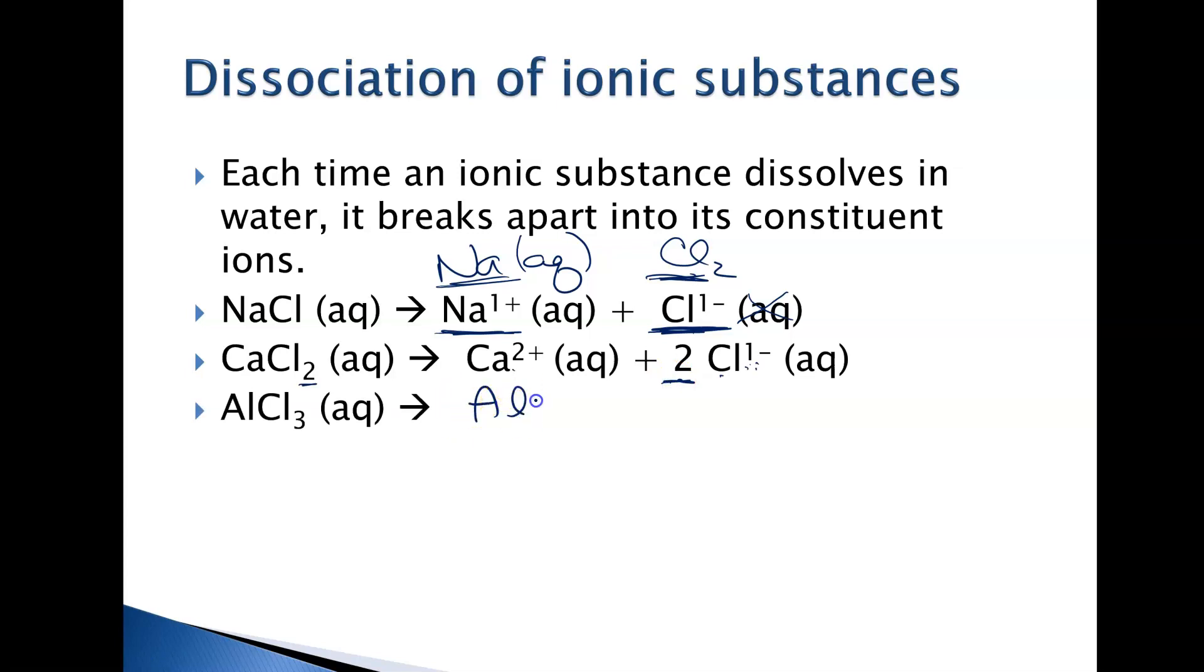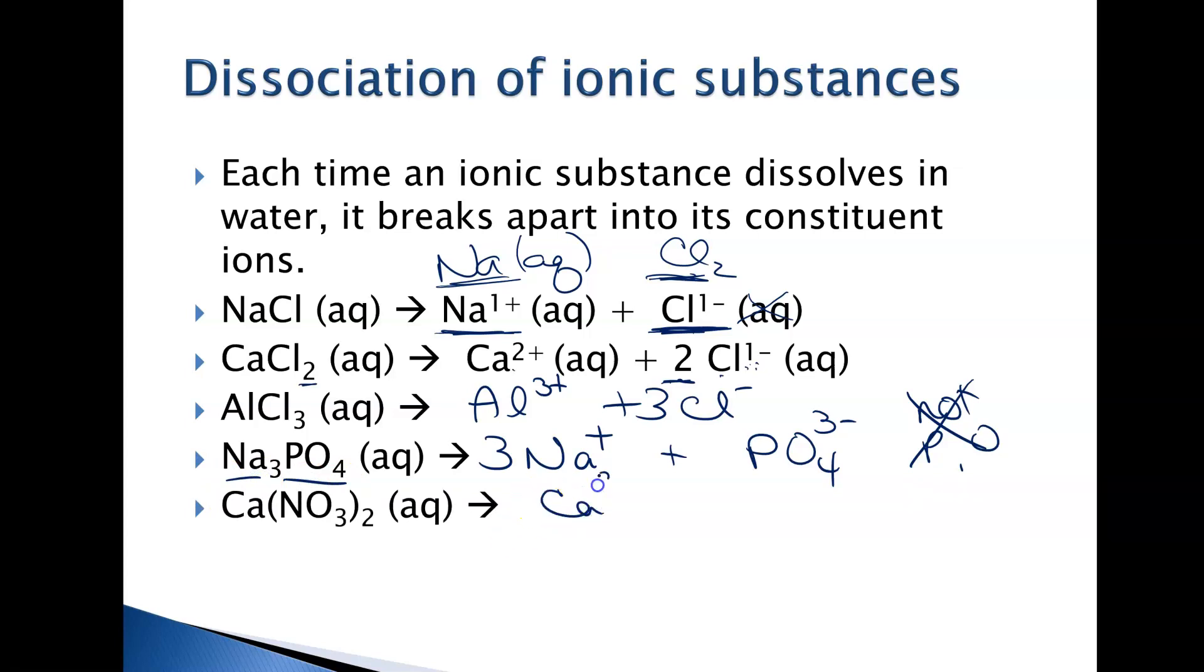If I did AlCl3, it'd be Al3+ and three chloride ions. It breaks apart into aluminum ion and chloride ion. For this one, that's sodium phosphate. It's going to break apart into sodium ion, and there are three of them, and it's going to break apart into phosphate ion, not P and O. It breaks apart into its name, phosphate and sodium. Calcium nitrate breaks apart into calcium ion and nitrate ion, and there are two nitrate ions, not N and O. For this one, the last one breaks apart into aluminum ion, two of those, and sulfate ion, three of those.